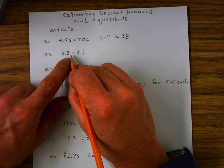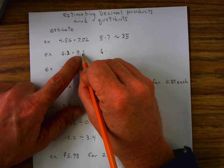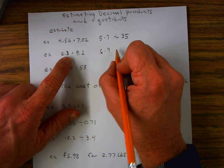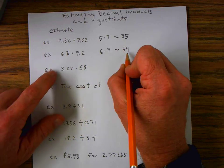This becomes 6.3 becomes 6 times 9.2 is just 9 because both 3 and 2 are less than 5. 9 times 6 is 54. So our approximate estimate is 54.